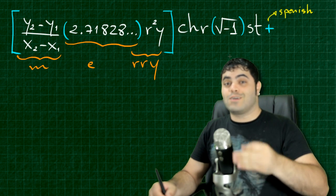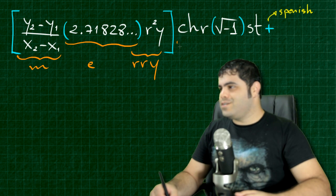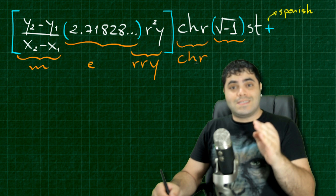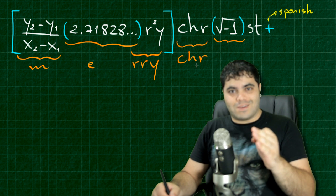And here, of course, Christmas. Why? Here you see C, H, R. This, the square root of minus one, is the imaginary unit.